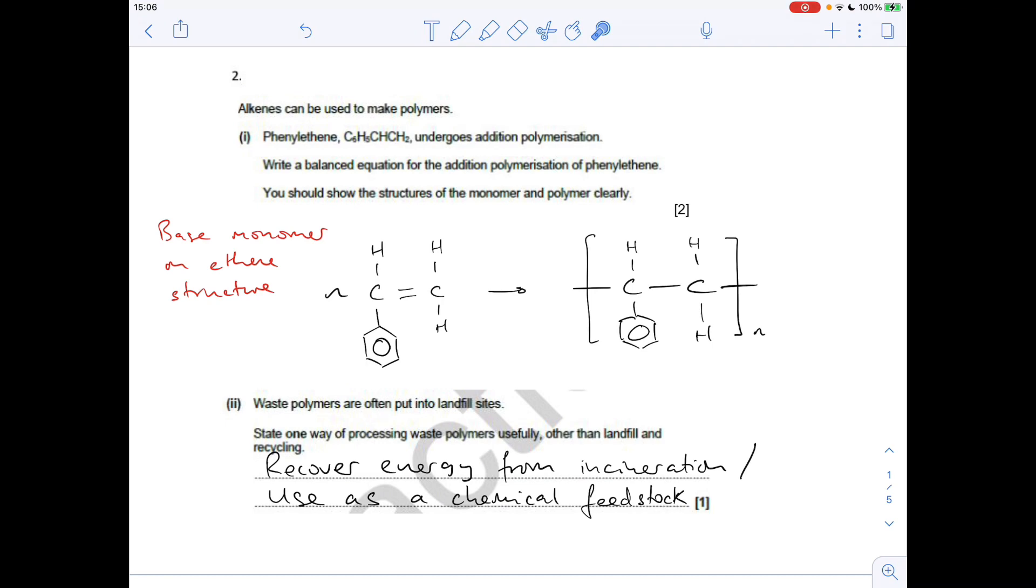Next part, waste polymers are often put into landfill sites. State one way of processing waste polymers usefully, rather than landfill or recycling. So the key word there is usefully. You could recover the energy from incineration, or you could turn it back into the monomer, and you could actually use it as a chemical feedstock.